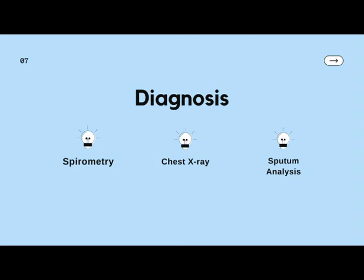The third laboratory test that helps in diagnosing cough is sputum analysis. We can analyze sputum in the laboratory by microscopic examination, as well as by culture and sensitivity tests. By microscopic examination, we can find malignant cells, bacteria, or other abnormal features. By culture, we can identify different types of bacteria and determine whether the cough is due to a chronic specific infection, a viral infection, or an allergic condition.